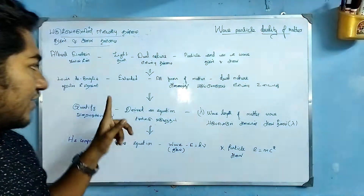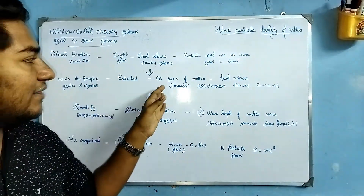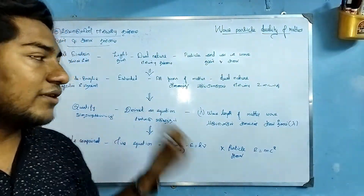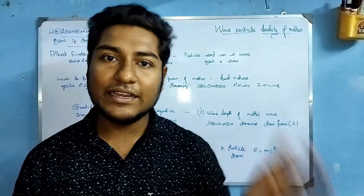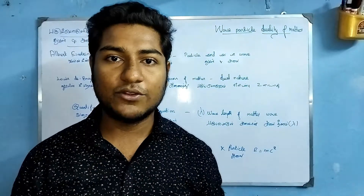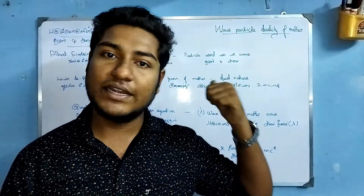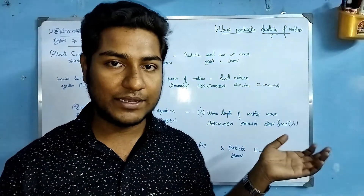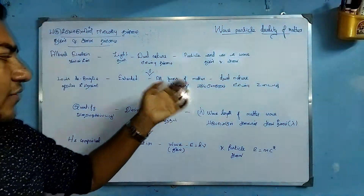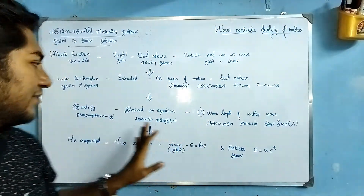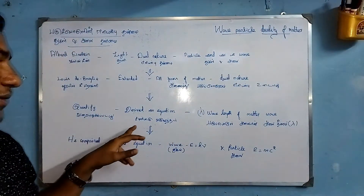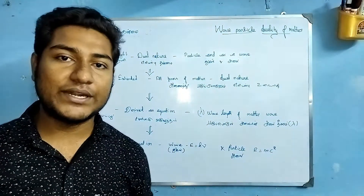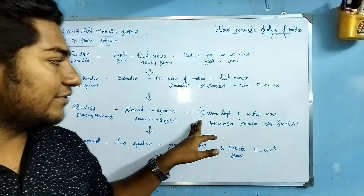So what we do is, Louis de Broglie extended this concept. All forms of matter have a wave nature. If you think about it, you can explain it in a simple way — you can explain it in terms of light. Louis de Broglie — how do you explain it? Because the equation is different. All forms of matter are the same.